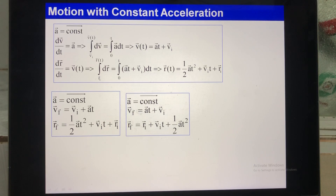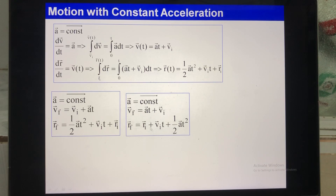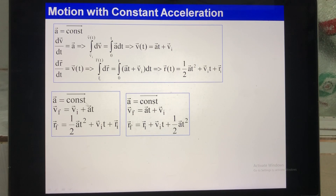Here is the result when acceleration is constant: you calculate velocity this way, and the position vector this way. I rewrite the formulas — first with time and velocity, then with initial position, velocity, and acceleration. These two forms are essentially the same.